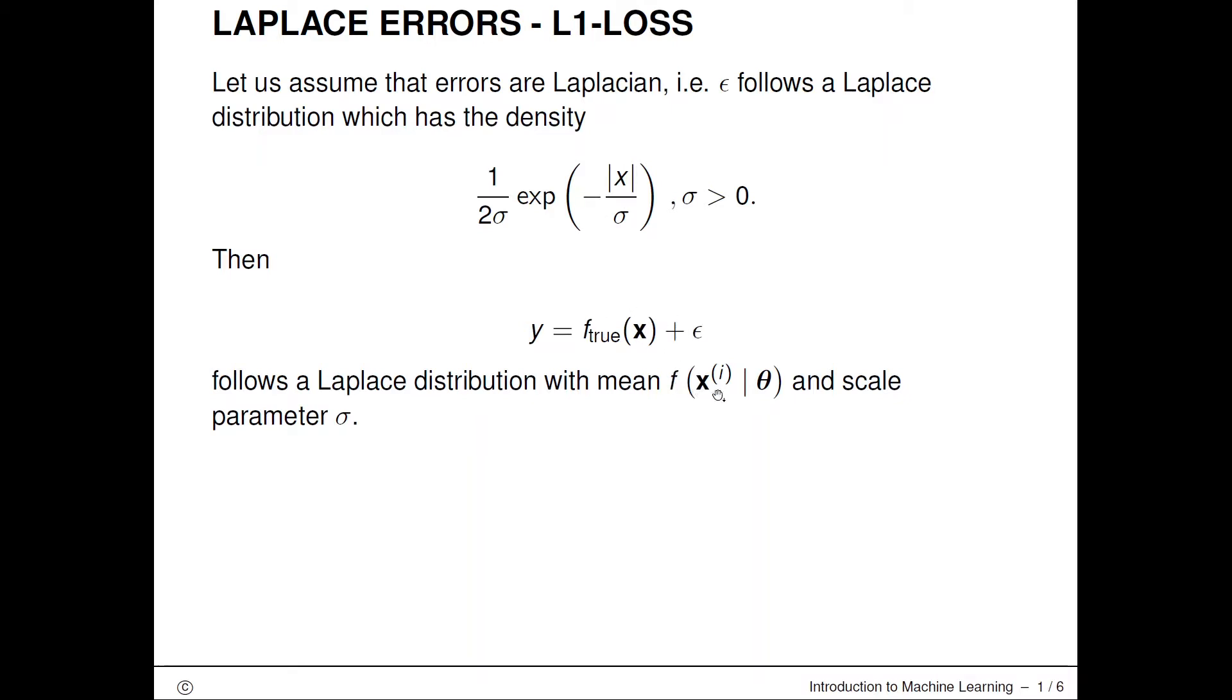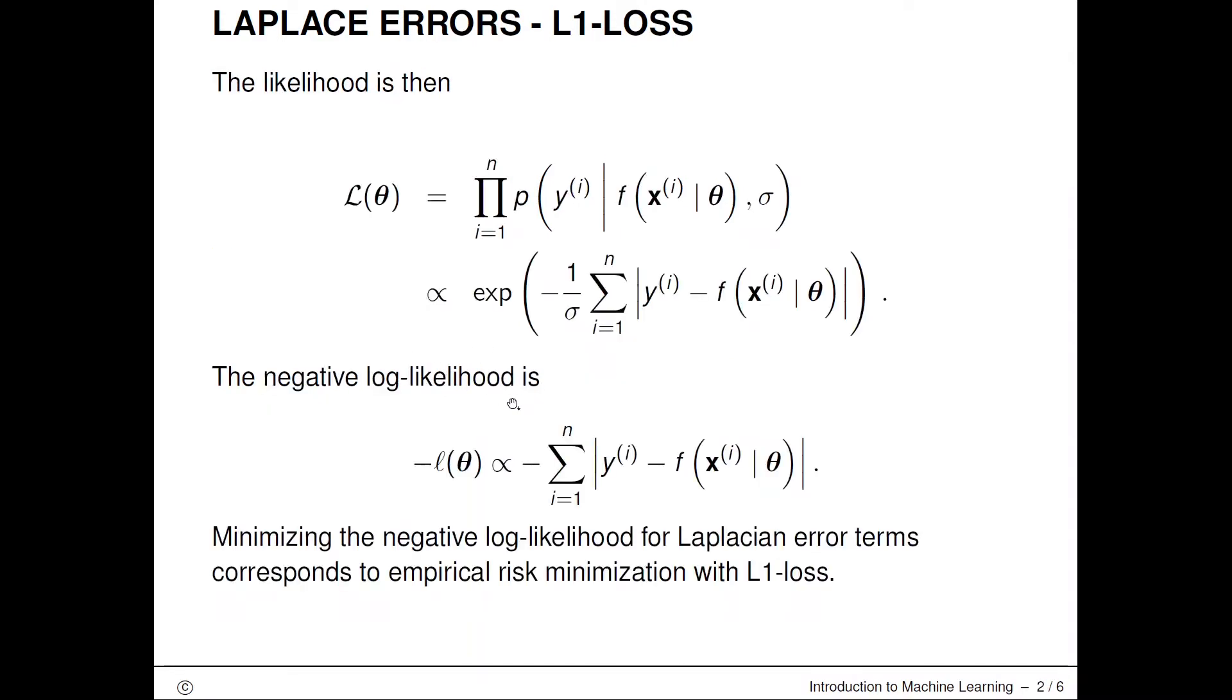If we make an assumption of additive errors as before but now assume that our error distribution follows this Laplacian distribution, we do minus log of things. This is completely analogous to what we did before for the L2 Gaussian case.